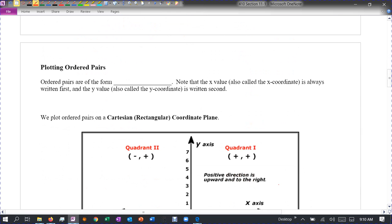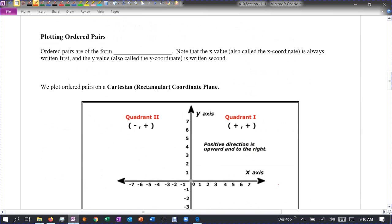Okay, so back to ordered pairs. Plotting ordered pairs. Ordered pairs are of the form, and I told you it's a set of parentheses with a comma, and we usually put an X here for the first number and Y here for the second number. The X value is called the X coordinate, and the Y value is called the Y coordinate. And the order matters here. Your X is always first, your Y is always second.